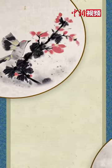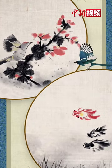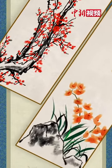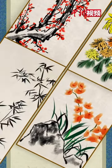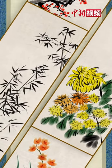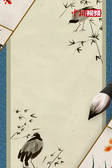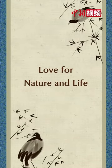The flowers, birds, fish and insects in the painters' works repose on the aesthetic relationship between humans and other creatures. The plums in the snow, the elegance of orchid, the straightness of bamboos, and the tenacity of chrysanthemum are all expressions of Chinese literature's love for nature and life.